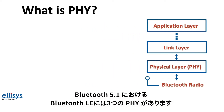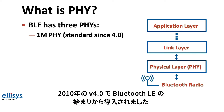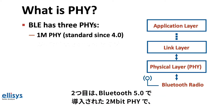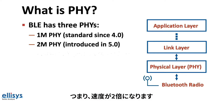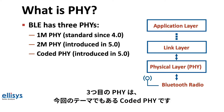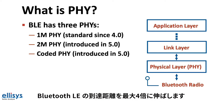As of Bluetooth 5.1, Bluetooth Low Energy has three PHYs. The first is the standard 1 megabit PHY, introduced since the beginning of BLE in 2010 with version 4.0. The second is the 2 megabit PHY introduced in Bluetooth 5.0, which doubles the speed. The third is the Coded PHY, also introduced in Bluetooth 5.0, used to achieve longer range — up to 4 times the standard BLE range.